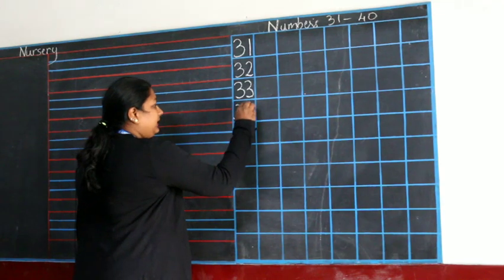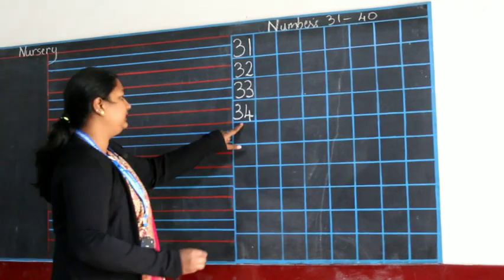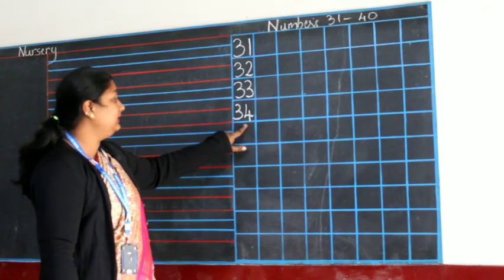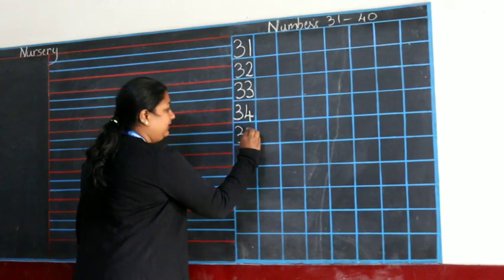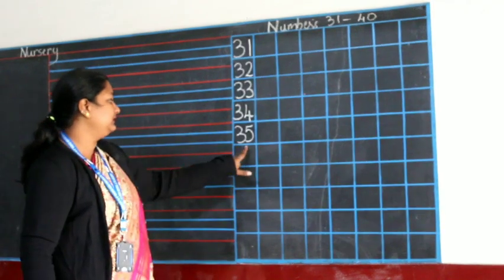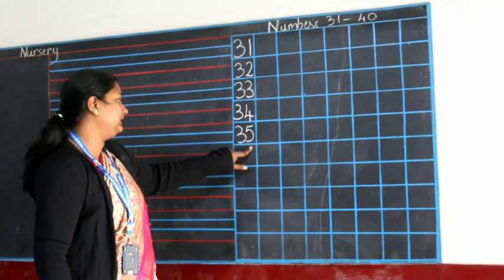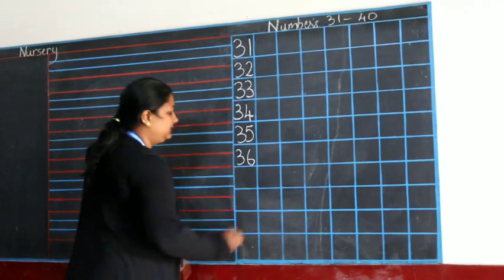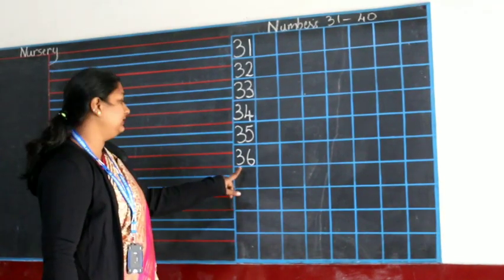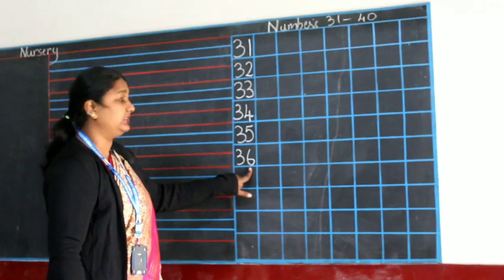3, 4, 34. 3, 5, 35. 3, 5, 35. 3, 6, 36. 3, 6, 36.